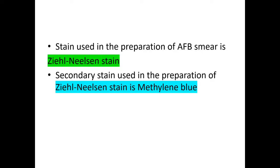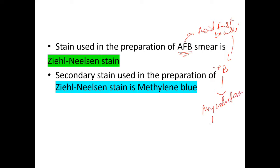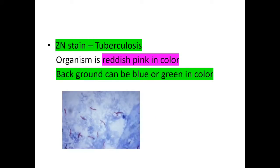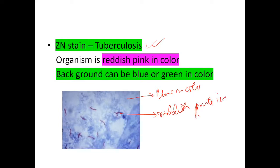Now we study the Ziehl-Neelsen stain. This stain is used in the preparation of acid-fast bacilli (AFB) smears. When we hear acid-fast bacilli, we think of tuberculosis — Mycobacterium tuberculosis. The secondary stain used in Ziehl-Neelsen staining is methylene blue. The tuberculosis organism appears reddish pink in color, while the background is blue or green.